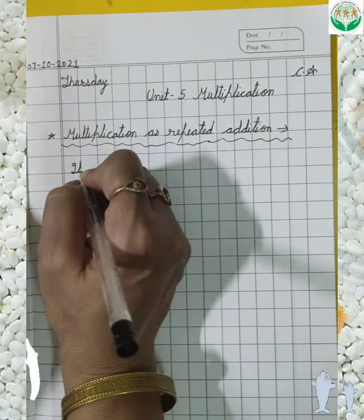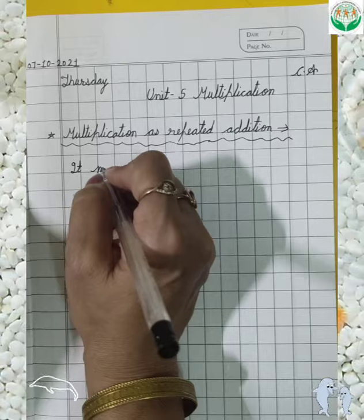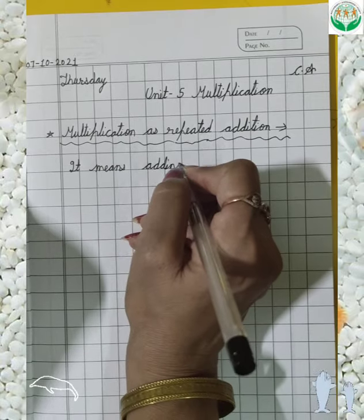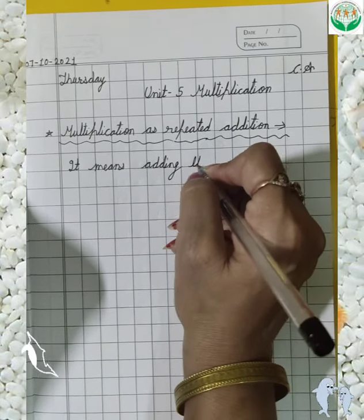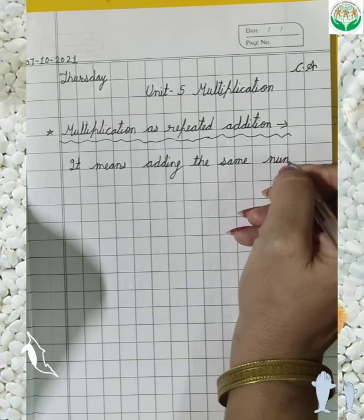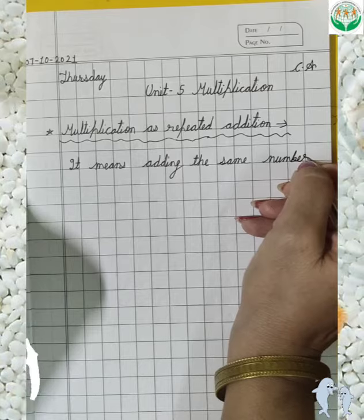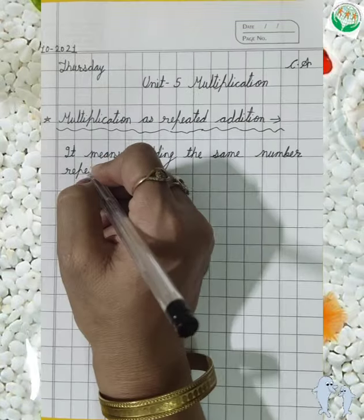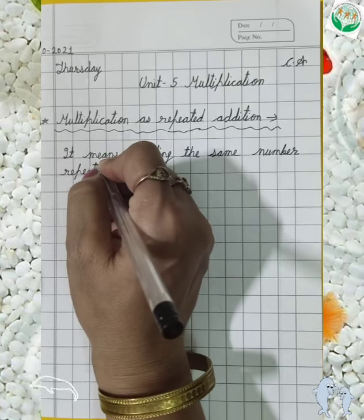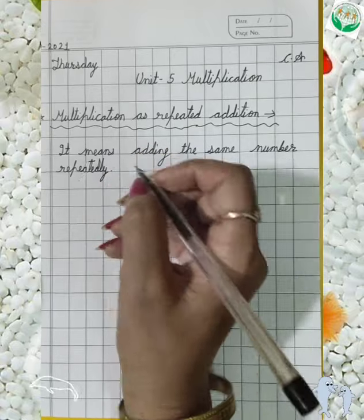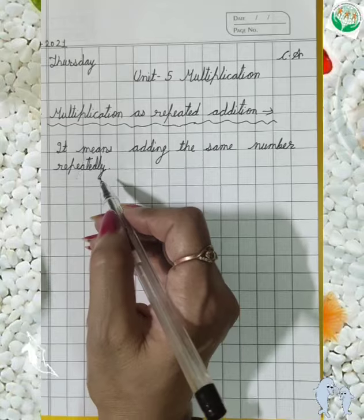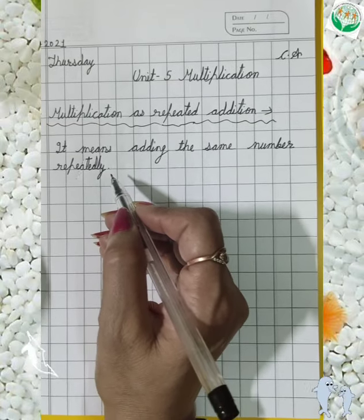It means adding the same number repeatedly. Yani kisi bhi number ko bar bar repeat karke add karna — that means adding the same number over and over again.